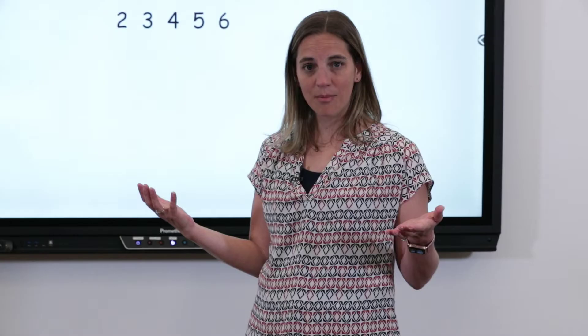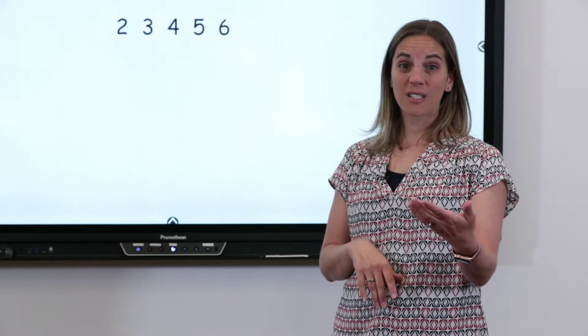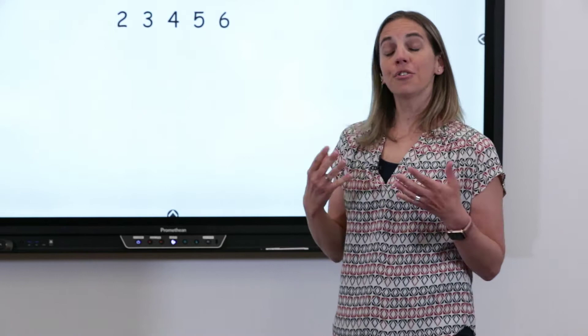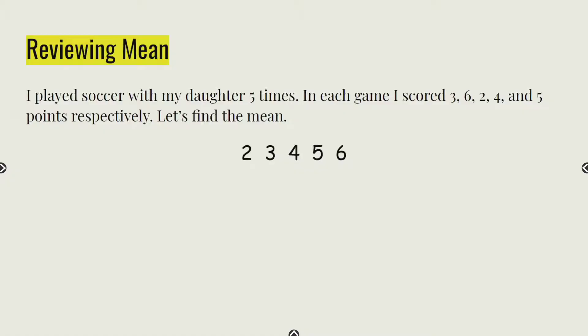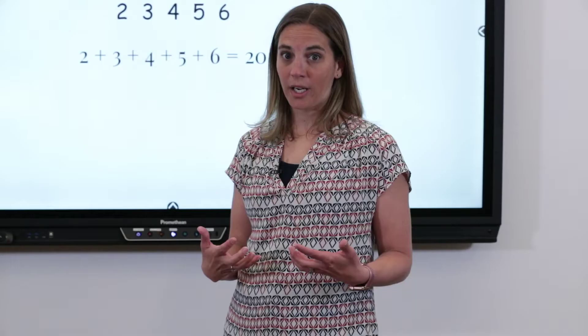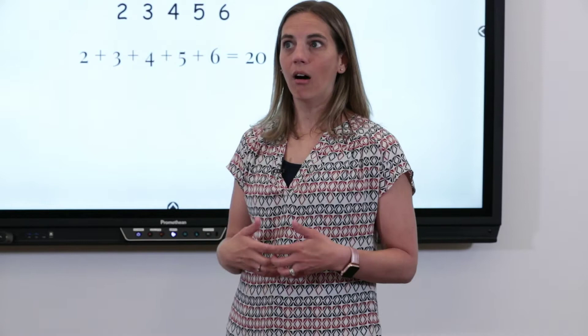Our next step was to add those numbers. I'm going to give you just a few seconds to add those numbers together. You can choose to group them into sets or count them in your head, however you choose to add. Hopefully when you added those numbers together you came up with the answer 20. So the sum of our data was 20 — altogether I scored 20 goals when I played with my daughter.